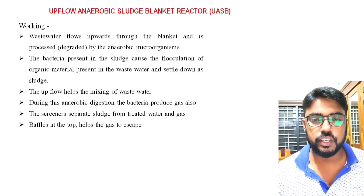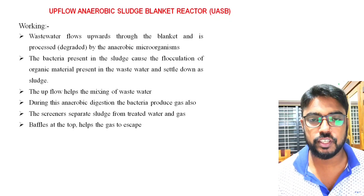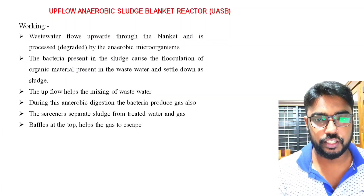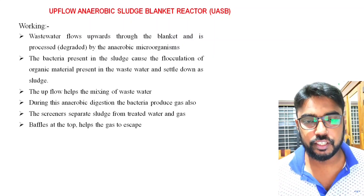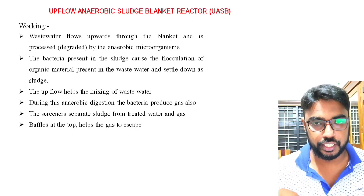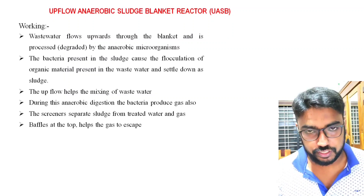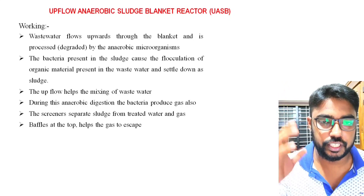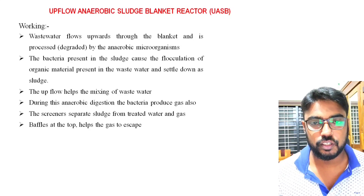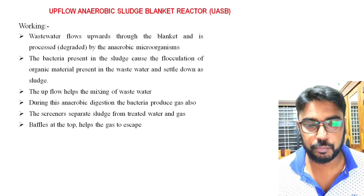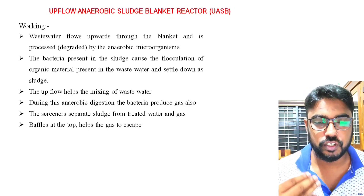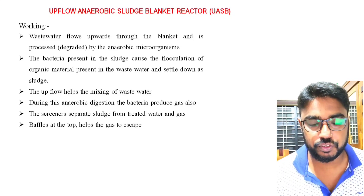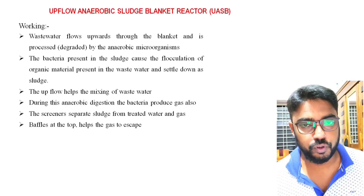Now we can see the working of the upflow anaerobic sludge blanket. The wastewater flows upward through the sludge blanket. The organisms present in the sludge degrade the organic materials, which then flocculate and settle as sludge in the lower sludge layer. The gas formed is removed from the top of the reactor. Screens separate the sludge from the treated water and gas. The gas escapes from the chamber via biogas outlets placed at the top of the reactor. The upward movement of wastewater also helps with mixing inside the reactor.